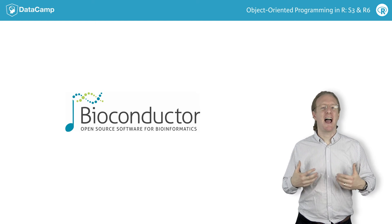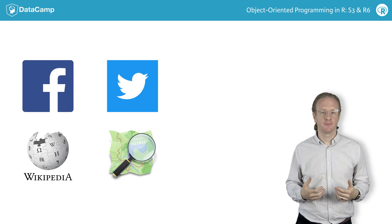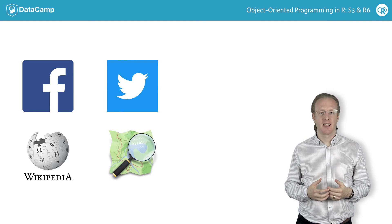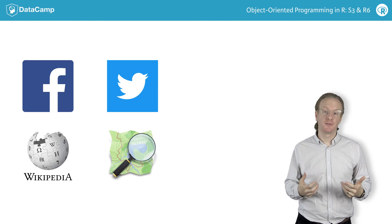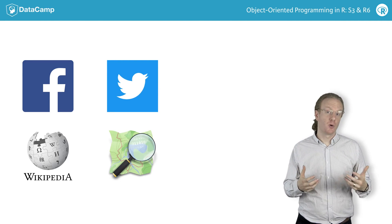Another example is accessing data through web application programming interfaces, or APIs. In this case, there is a limited number of responses that the website can provide, and you can define objects to store these responses.